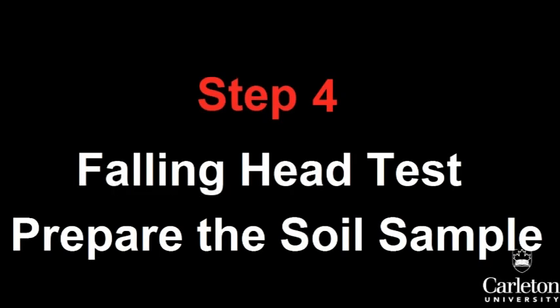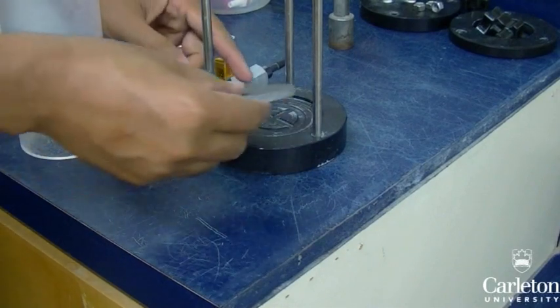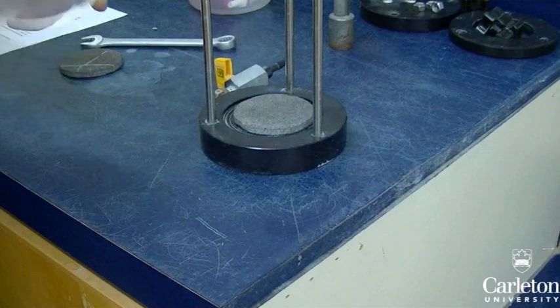For the falling head test, first we need to put together the test cylinder. Unlike with the constant head test which uses a screen, the falling head test uses a porous stone. Place the porous stone on the base.